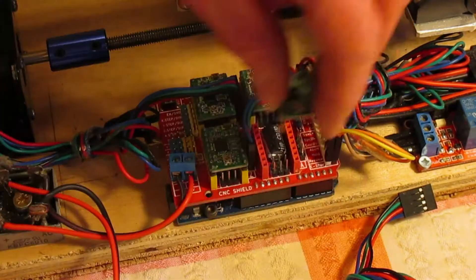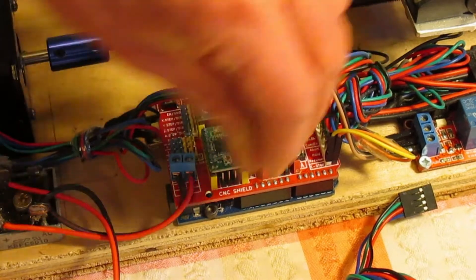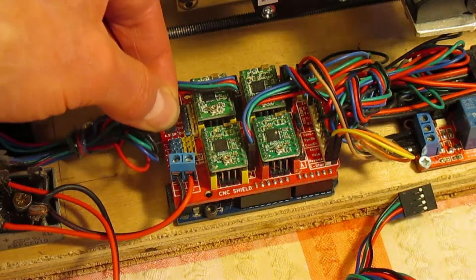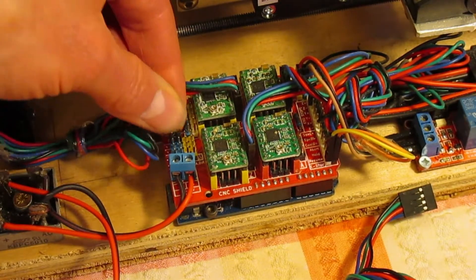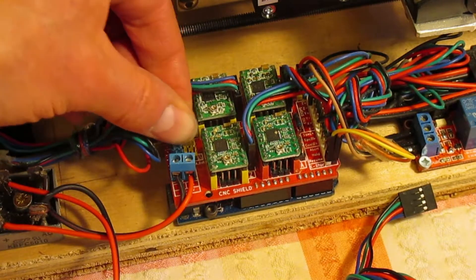Next I added another A4988 driver board to the spare A socket on the CNC shield V3. Make sure the power is off or you will fry the board, and added two jumpers to set the cloned axis to X.